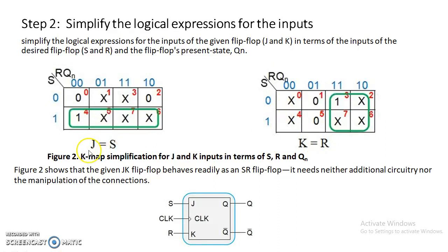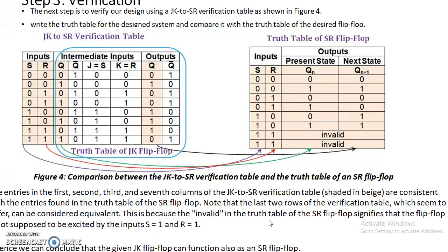Once we are aware of the relationship between J and S, K and R, it is very easy to draw the conversion flip-flop, which is shown in this particular diagram.